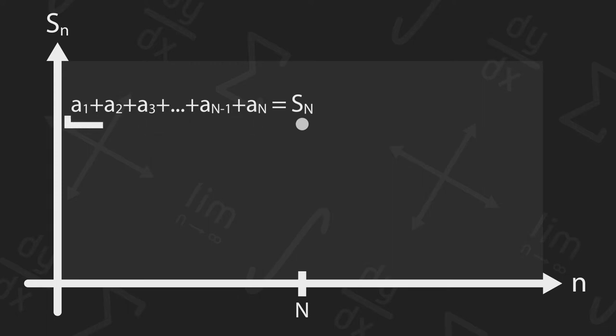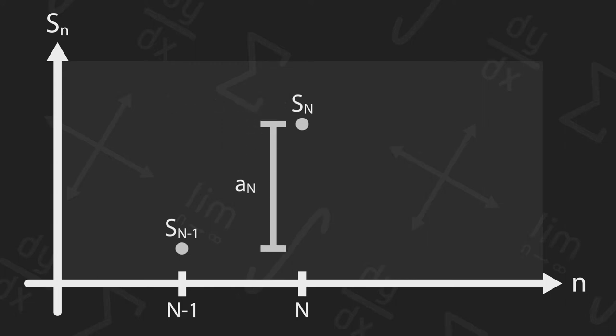This also means this sum is equal to the partial sum of the previous term plus the nth term. If we assume that a sub n is positive, we can plot S sub n minus 1 below S sub n and call the vertical distance between them A sub n.